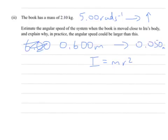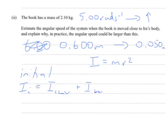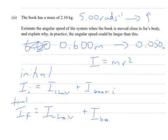We need a bit more information. We look at the total initial inertia, which is the inertia of the chair and Ira plus the inertia of the book. Then the total final inertia is the inertia of the chair — which doesn't change — plus the new inertia of the book in its final position.